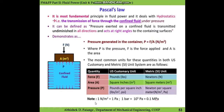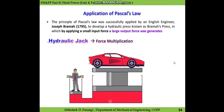The principle of Pascal's law was successfully applied by English engineer Joseph Brahma in 1795, who used this law to develop a hydraulic press called Brahma's Press, by which he was able to multiply the force applied at one point to another point. He demonstrated that by applying a small unit of force, a large output force can be generated using Pascal's law — this is called force multiplication.